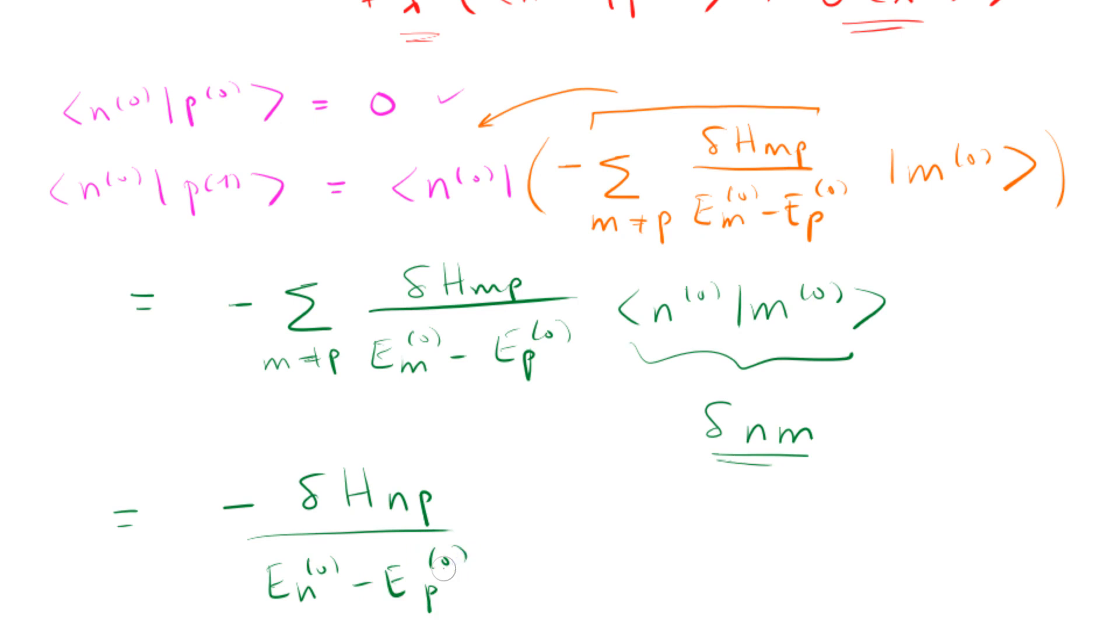So it just simplifies down to, in the end, we just get negative. Since this delta is here, it truncates the sum. And it truncates it just to delta H, N, P, over E, N0 minus E, P0. Now, if you're smart, and you're smarter than me, you would have realized that this is just, we could just use the formula with the sum, just with, instead of M, we have N here. That's definitely the easiest way. I just took the long way just to show you that they're exactly equivalent.